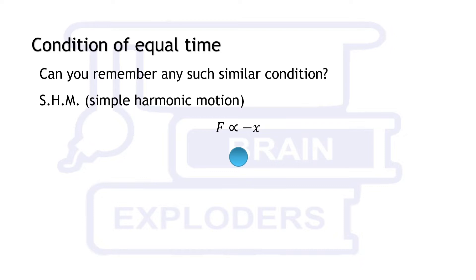Suppose this is the object and is currently on its mean position. No force is acting on it. As it is displaced from this position, some force starts acting on it.